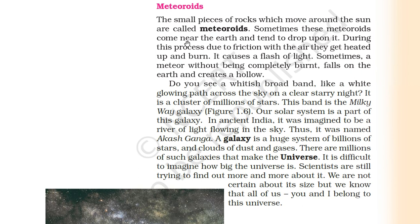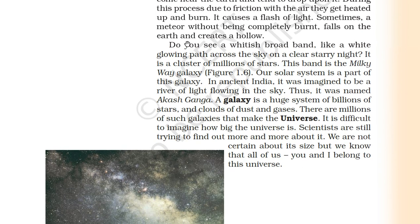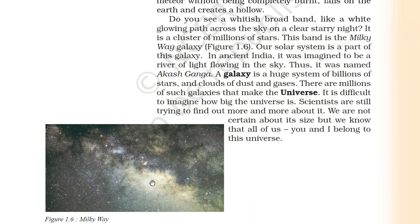Do you see a whitish broad band like a white glowing path across the sky on a clear starry night? You will see it in the picture. It is a cluster of millions of stars. All we know is the Sun is the star nearest to us, and the second nearest star to the Earth is Proxima Centauri. This band is the Milky Way Galaxy. In ancient India, it was imagined to be a river of light flowing in the sky, and thus it was named Akash Ganga.